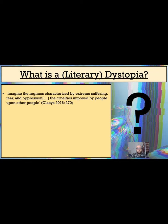Claeys also identifies two major types of dystopia: the internal dystopia, in which everyone's life is pretty rubbish, and also external dystopias, in which mostly outsiders to some sort of system, regime or society have their lives repressed and controlled.